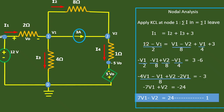When we expand the terms, we get 12 over 2 minus V1 over 2, and 12 over 2 can be taken as 6. Bringing that to this side and the remaining terms to the left-hand side, we get minus V1 over 2, minus V1 over 8, plus V2 over 8, minus V1 over 4, equal to 3 minus 6.